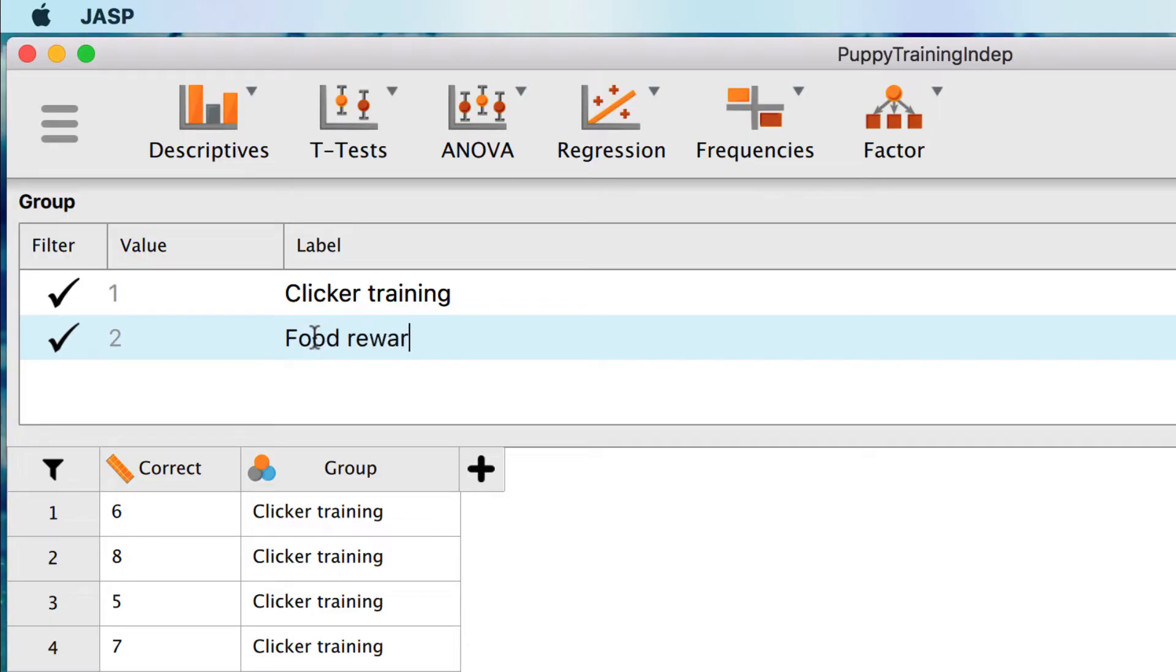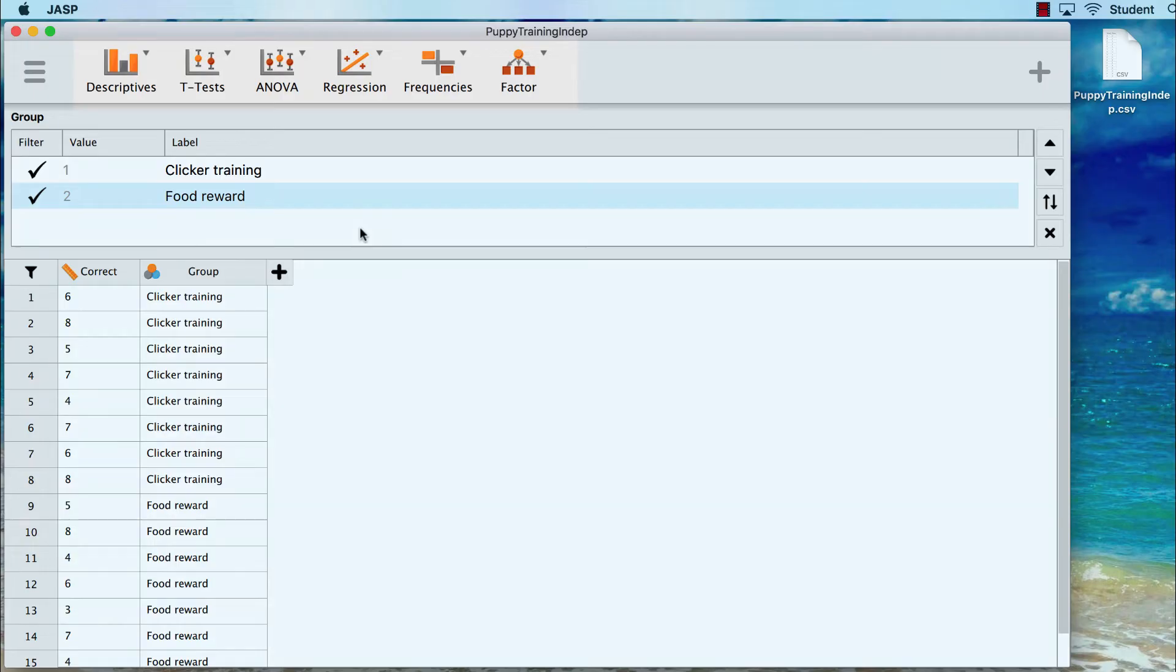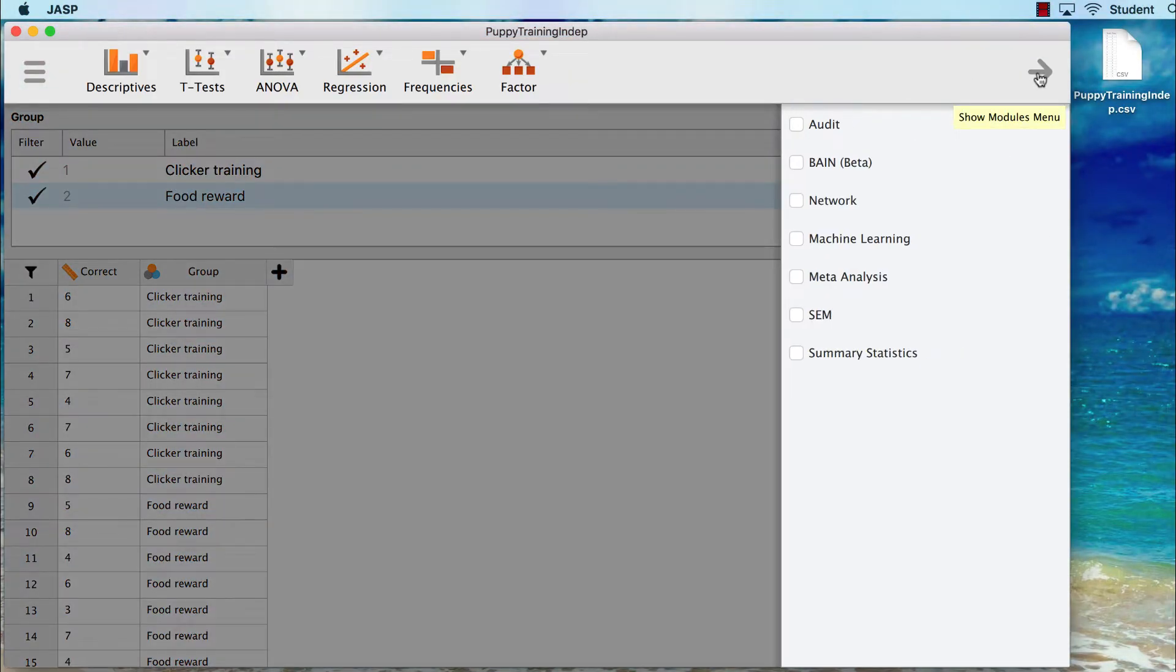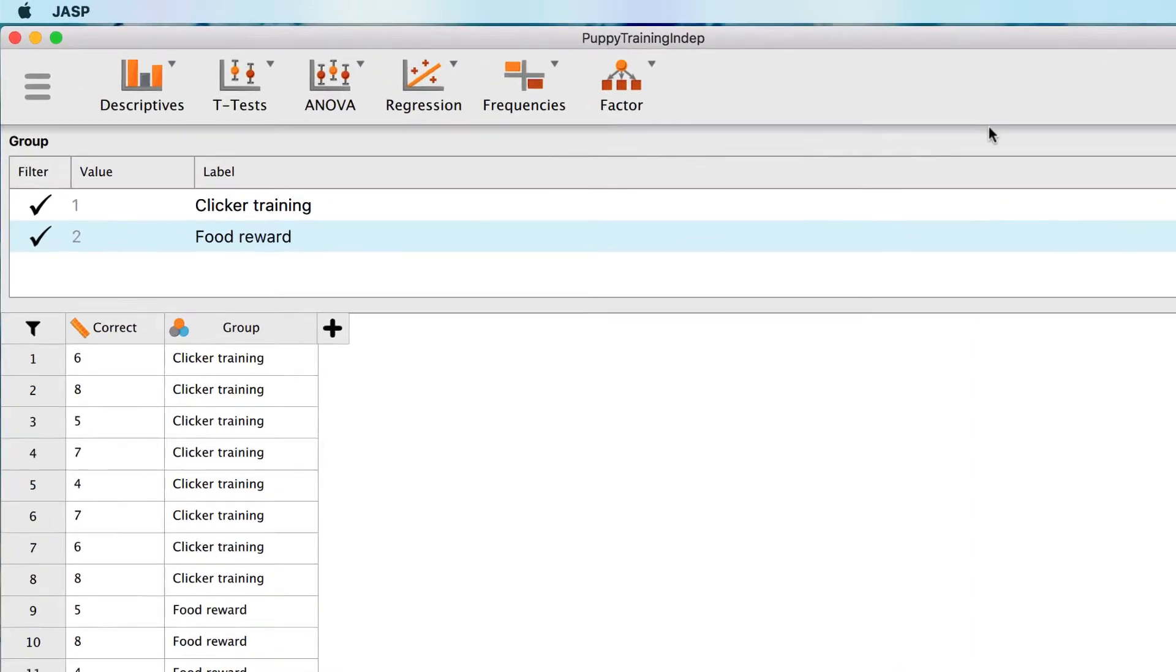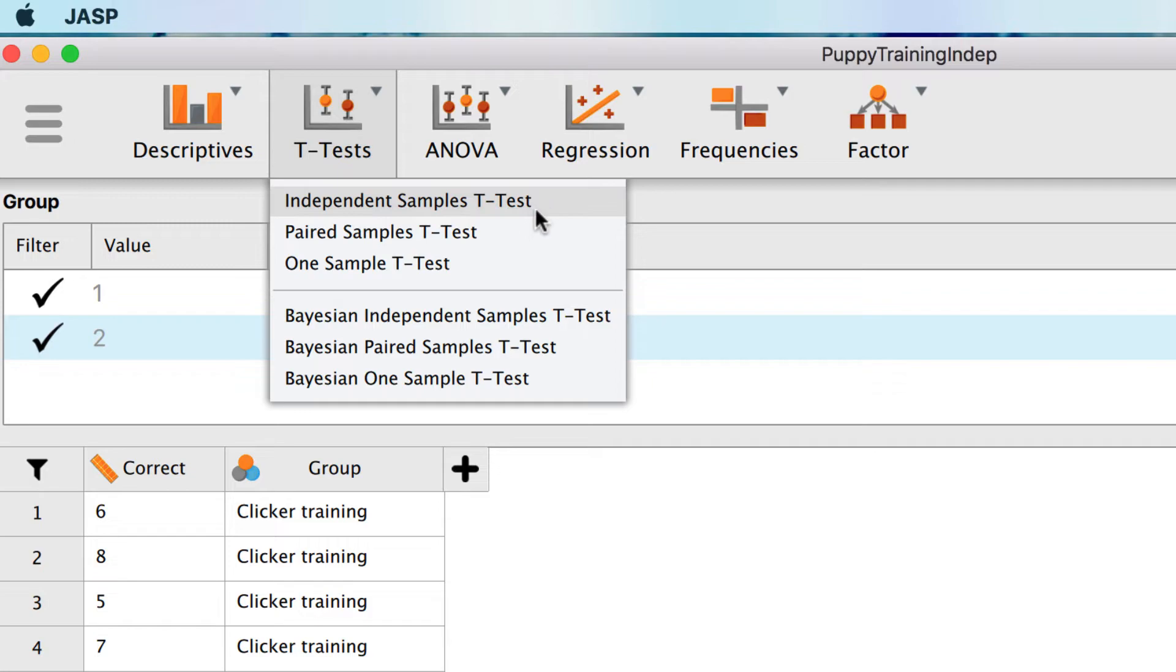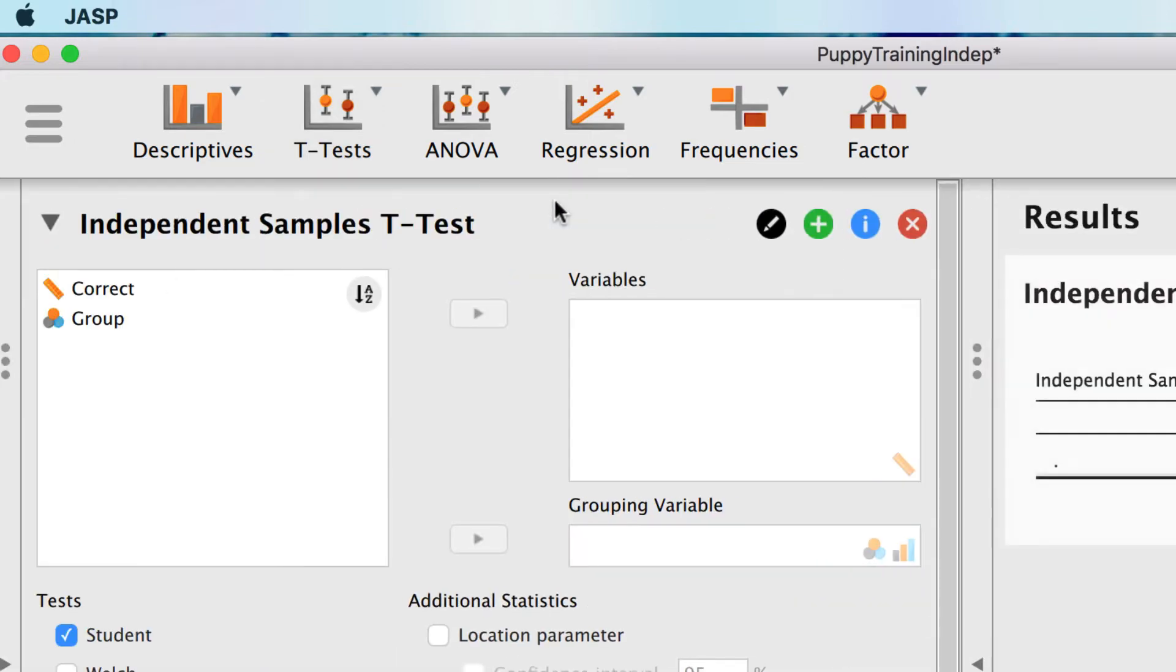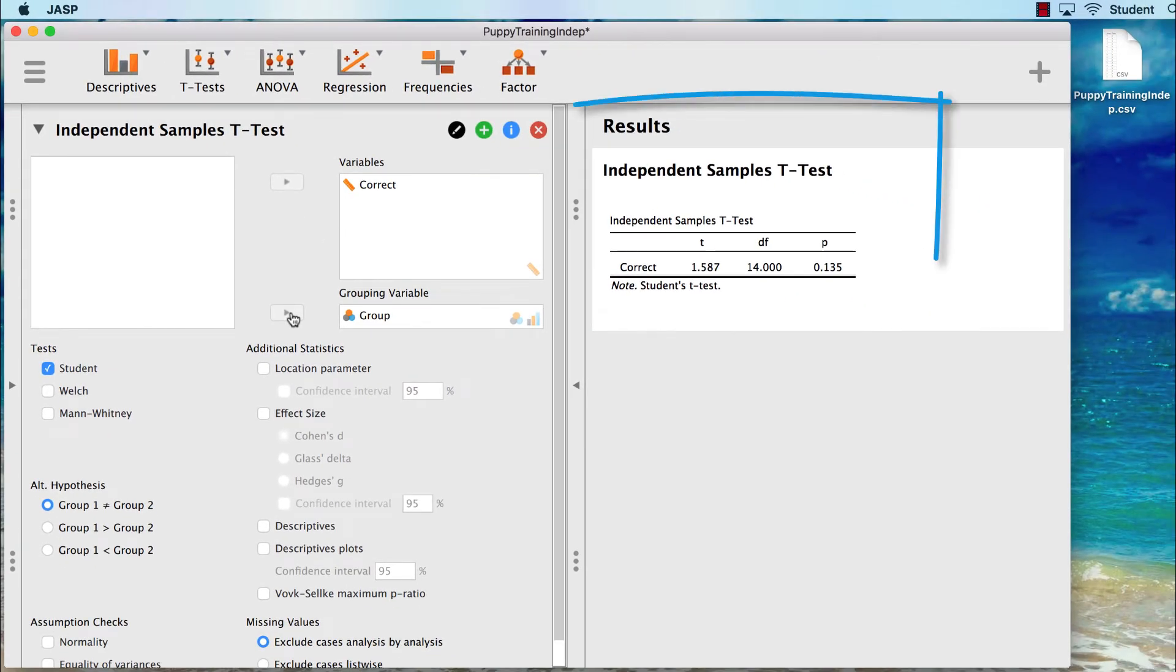We are now ready to do the analysis. Currently, I have six basic analysis options available. I could add more modules with the plus sign, but I don't need to do that now. The basic modules are exactly what I need. Select t-tests, Independent samples t-test. Move the scale variable correct into the variables window. Now place groups into grouping variable. JASP does the t-test and gives me the results in the results pane.